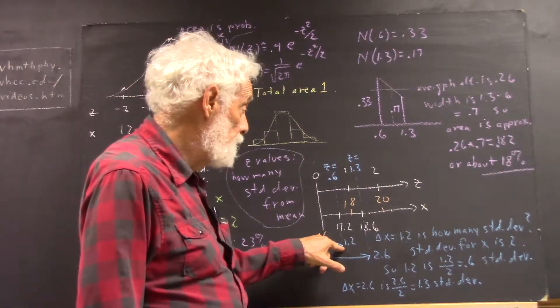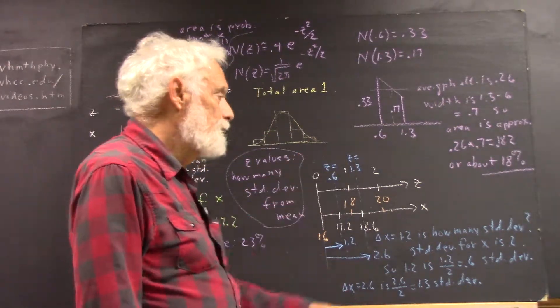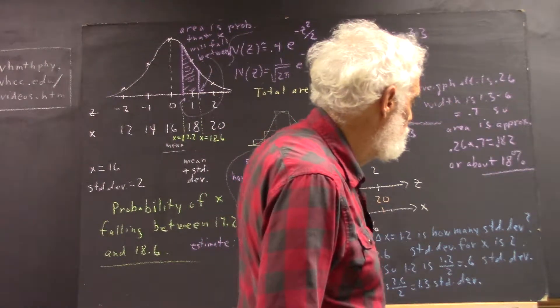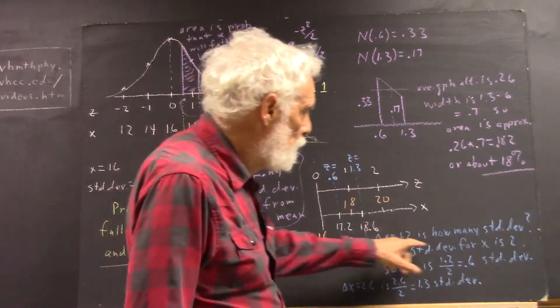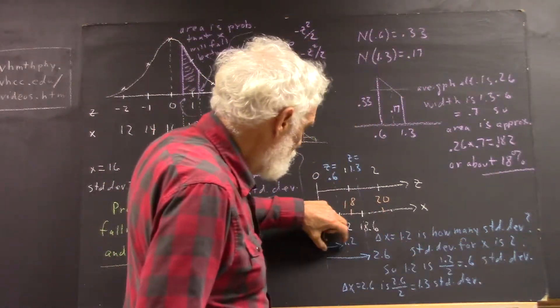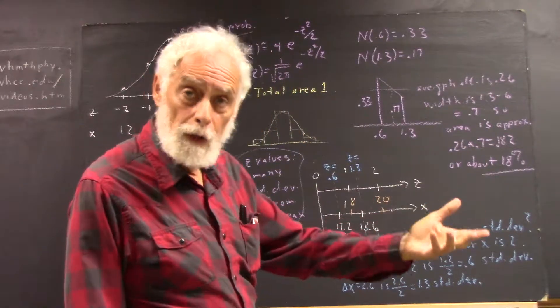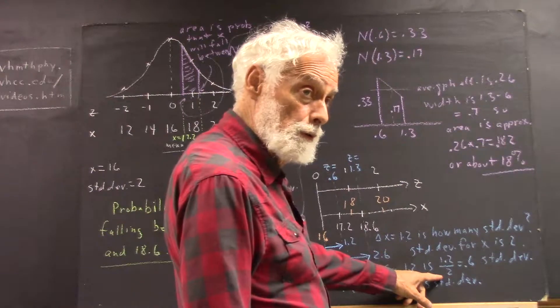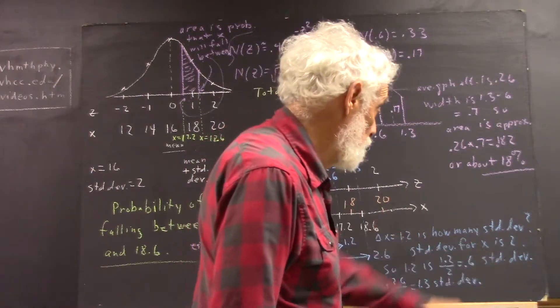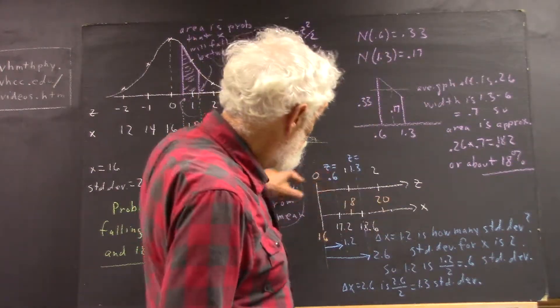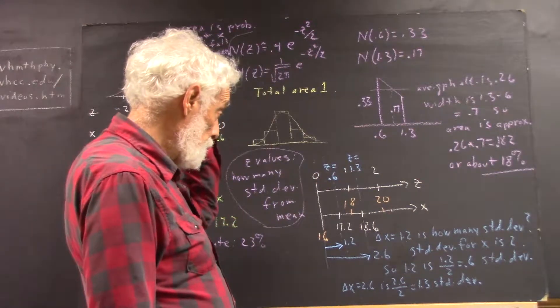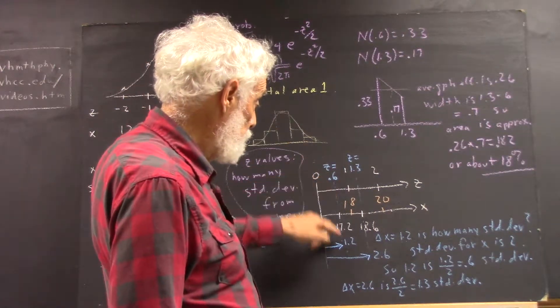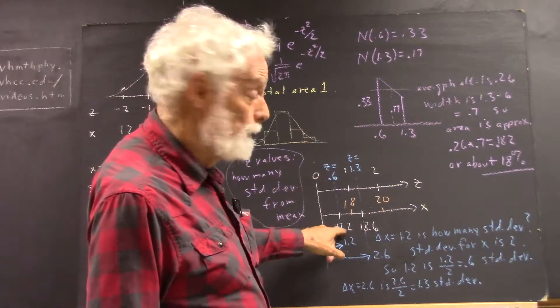How many standard deviations is that? Well, the x standard deviation is 2. And if we're 1.2 units, well that's less than a standard deviation. What fraction of a standard deviation? Well, that's 1.2 over 2, which is 0.6 standard deviations. z is the number of standard deviations. So z equals 0.6 when x equals 17.2.